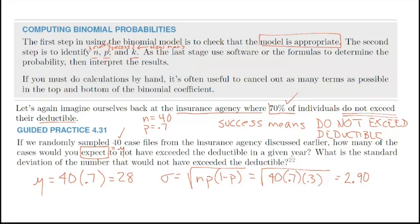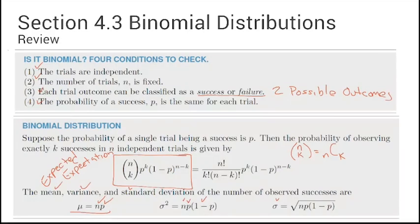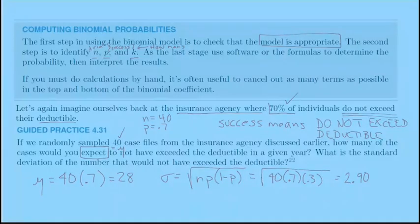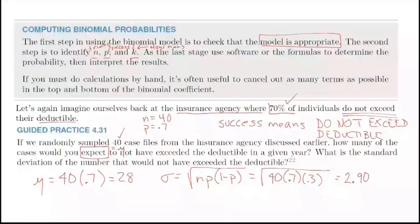These formulas for mean, variance, and standard deviation are only used when you have a binomial distribution type problem. We have other formulas for mean, variance, and standard deviation for other types of problems. So we had a mean of 28 and a standard deviation of 2.9.